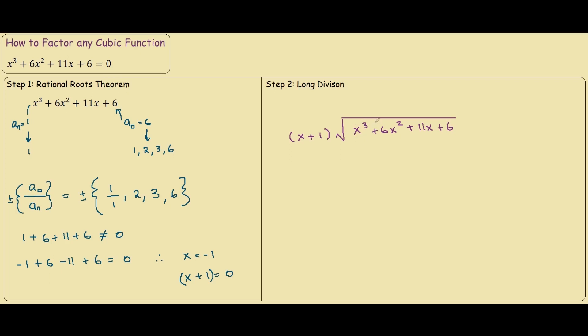So, what we do is focus on the first term, x cubed, and we want to see what we multiply this factor by to give x cubed, and that will be x squared, because if you do x times x squared, you have x cubed, plus 1 times x squared.